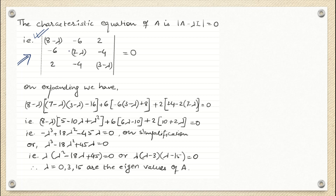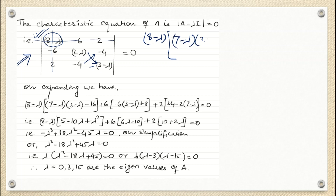To find the determinant of the characteristic equation, take the first row element (8-λ), ignore its row and column, and do the multiplication of the remaining 2×2 submatrix: (7-λ)(3-λ) minus (-4)(-4).